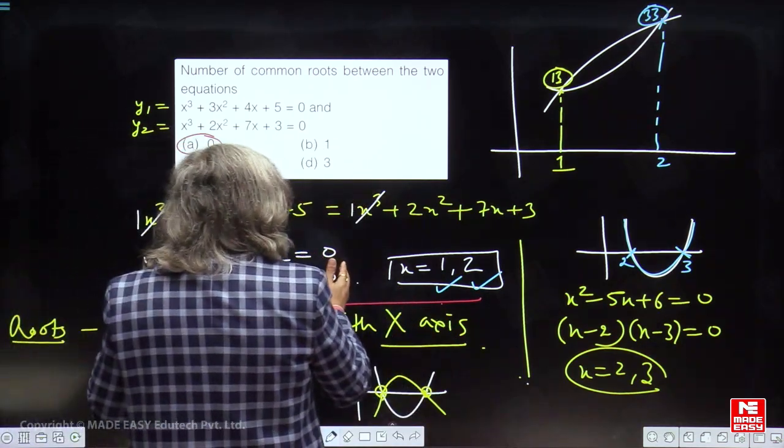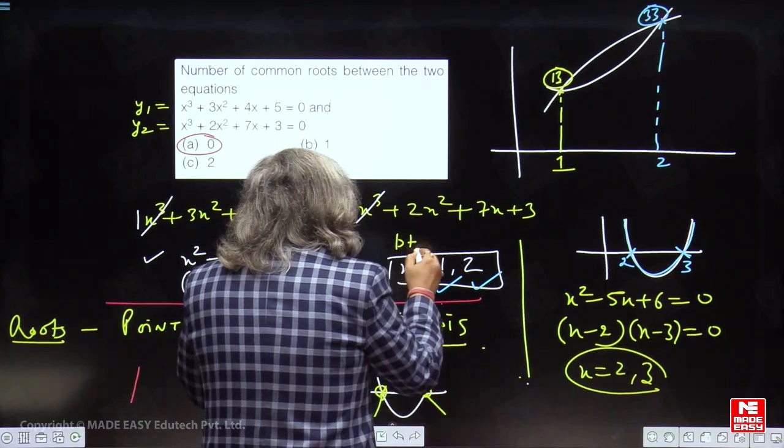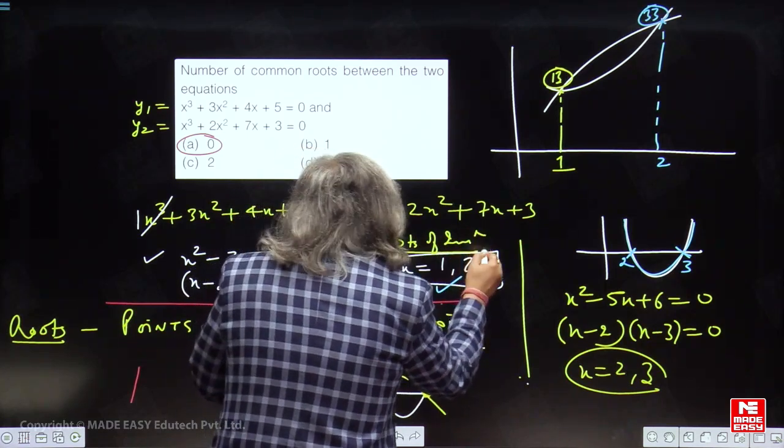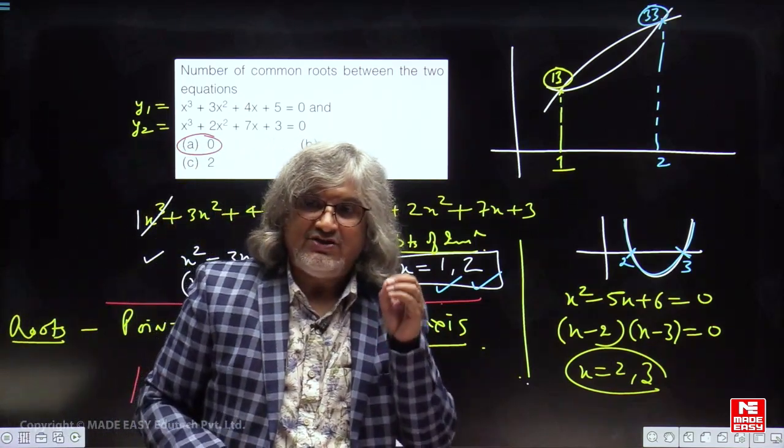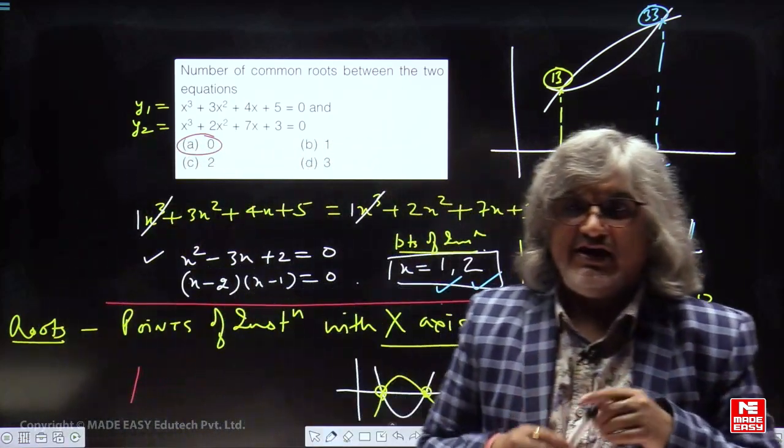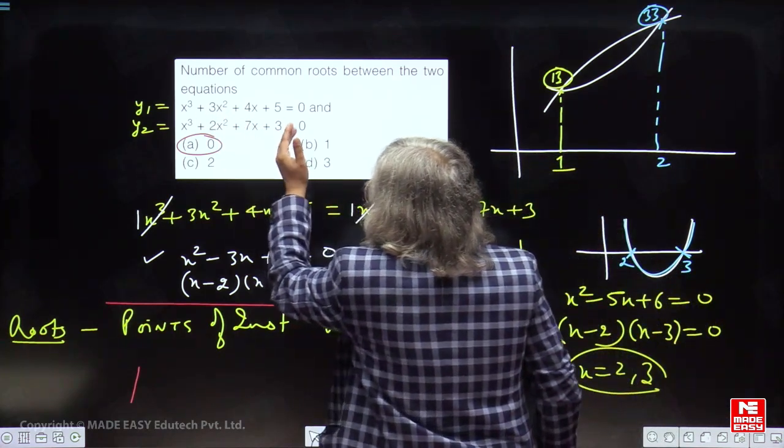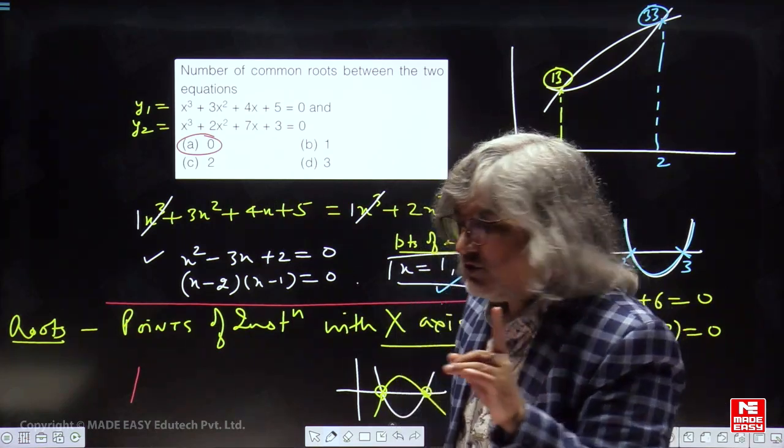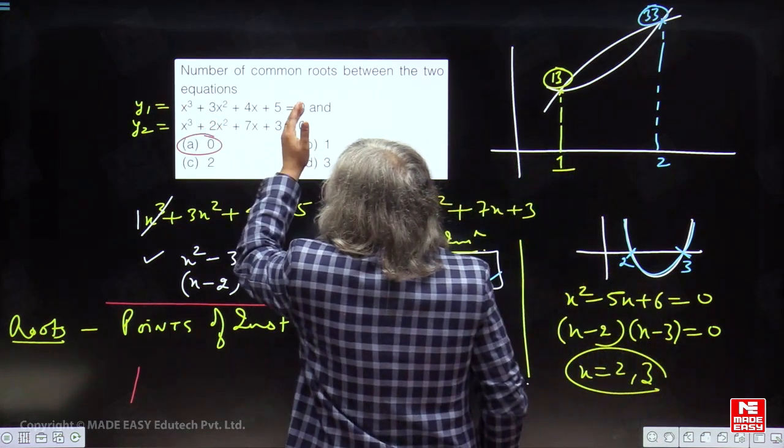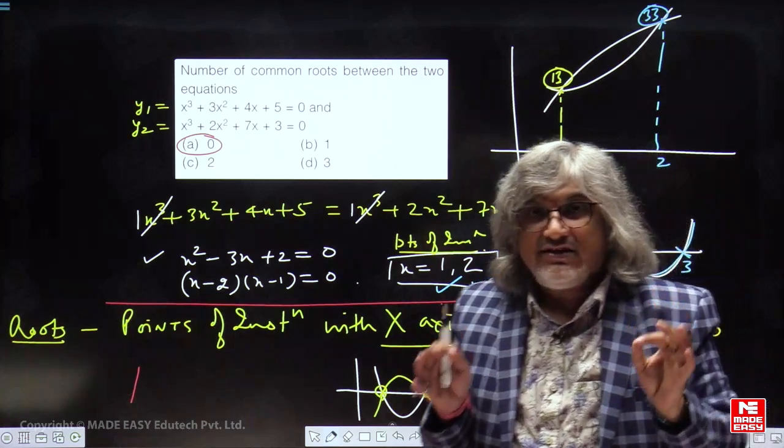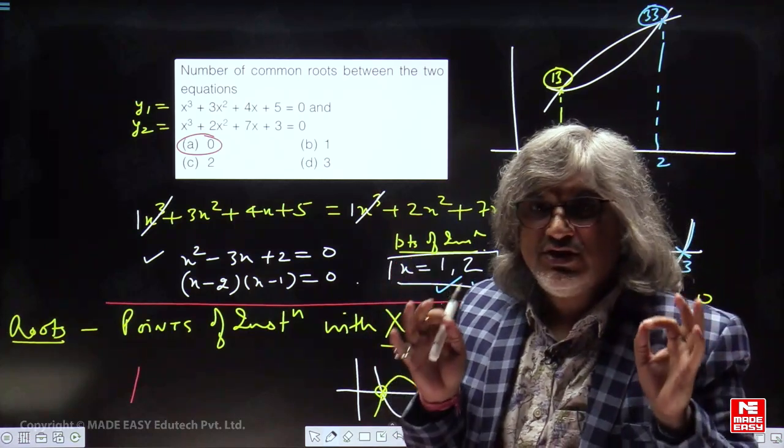Here, they are point of intersection because none of these values satisfy the equation. Y is not becoming 0 in either of the cases. These are merely points of intersection and they are not common roots. Common roots for the equation will stand out to be 0. Common roots nikalne ke liye sabse pehle hume y1 equal to y2 yani point of intersection aayenge hamare. If these point of intersection satisfy the equation, they will become common roots. If they are not satisfying the equation, they will merely remain to be merely point of intersection, they will not become common roots.